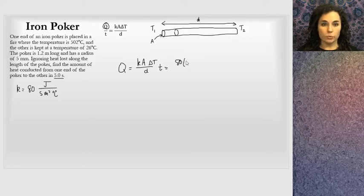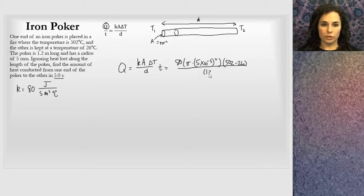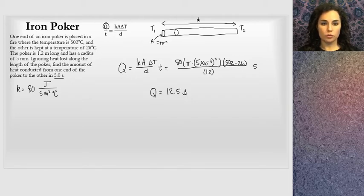I get 80 times the area. The area is going to be pi r squared for this poker, so pi times 5 times 10 to the negative third squared. Remember, we're in millimeters, so I'm converting to meters. Delta T is 502 minus 26. I'm going to divide by the distance, 1.2, and multiply by 5 seconds to get the total amount of heat. About 12.5 joules, which isn't a lot. It's only 5 seconds on a rather poor conductor. Maybe that's why we use iron for an iron poker—it's cheap but doesn't conduct well. Maybe safer than a wooden stick.